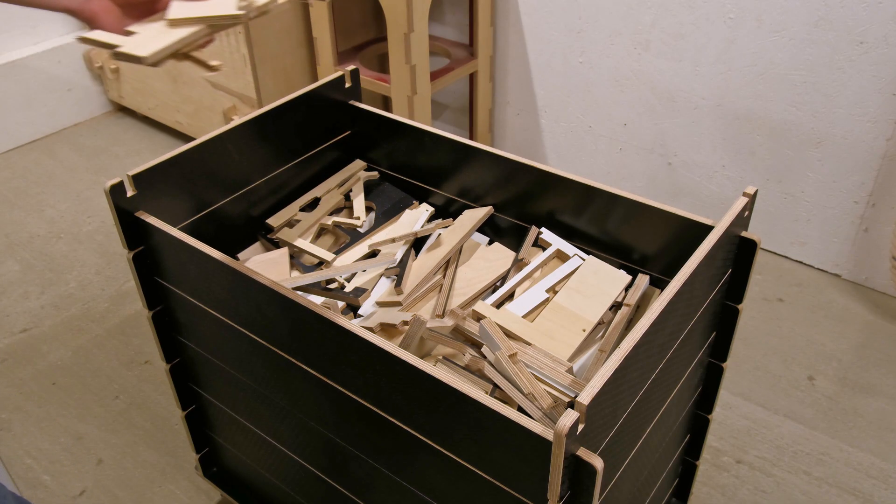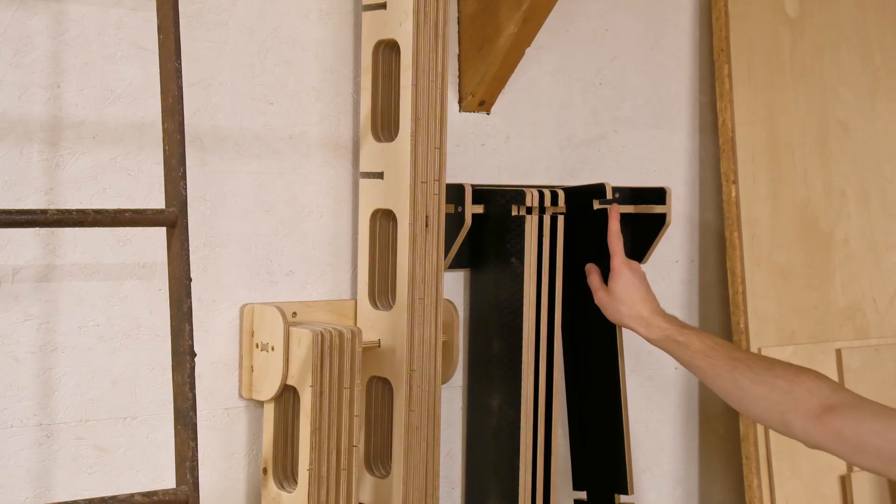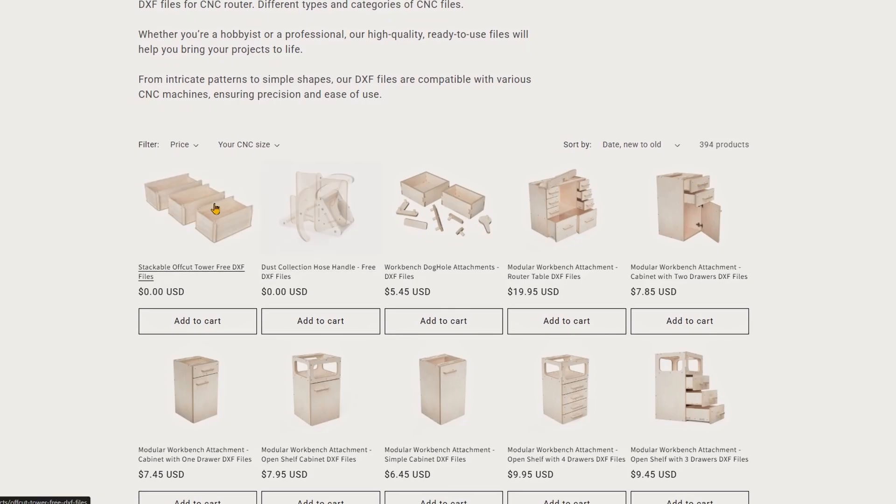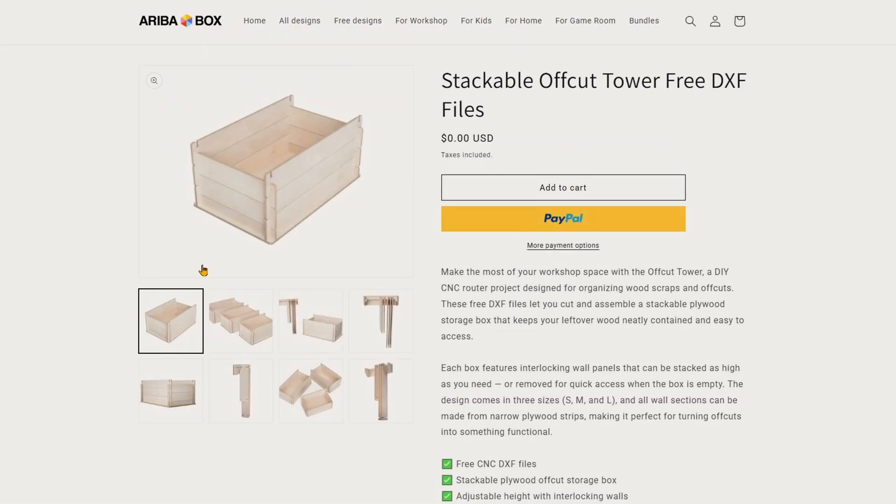Something that grows with the offcut pile and takes up less space when not in use. And if it works well, we will share the free DXF files for the build on ribobox.com.